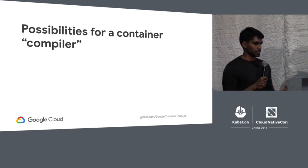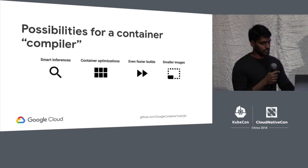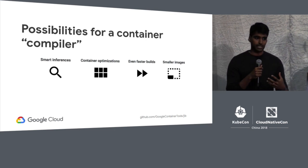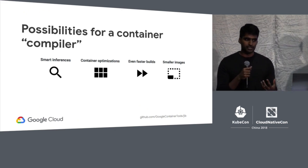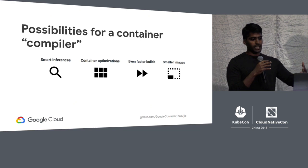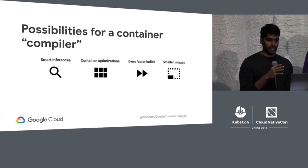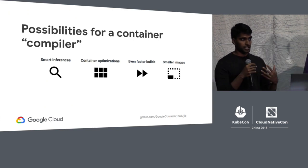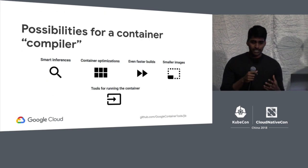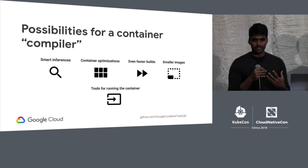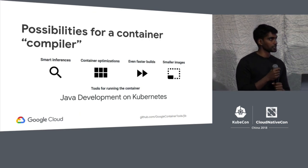Because Jib is built into your build system, there are other possibilities for a container compiler we'd like to explore. We could do smarter inferences like automatically exposing a port when we detect your application is listening on it. We could do container optimizations for memory and CPU based on your application. We can organize your build into logical groups of code that change together so layers are smaller and builds are faster. Finally, we can take advantage of JLink and modules to produce smaller container images by reducing the size of your JRE.